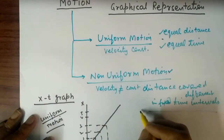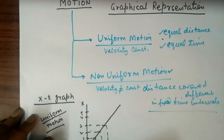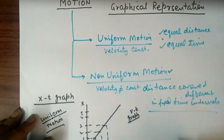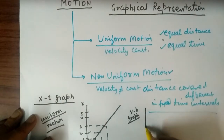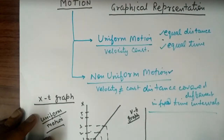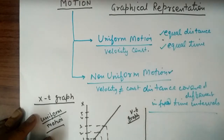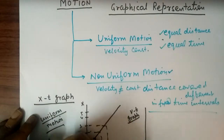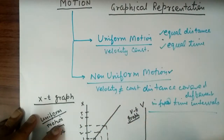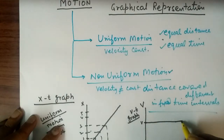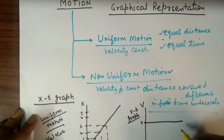If we represent uniform motion by a VT graph, in place of position or distance, we take velocity of the object on the Y-axis and time on the X-axis. In uniform motion, velocity is constant, so the velocity remains constant with respect to time. This is the VT graph of uniform motion.